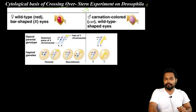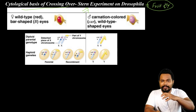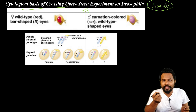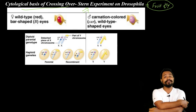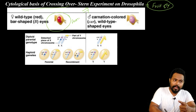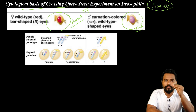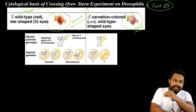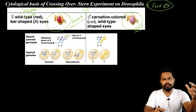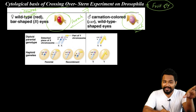In this experiment we work with Drosophila, the fruit fly. We will experiment with female and male. The female is red eye, which is the wild type. Wild type means dominant — this is the dominant type. We work with the animal and the wild type, and the dominant type is red.